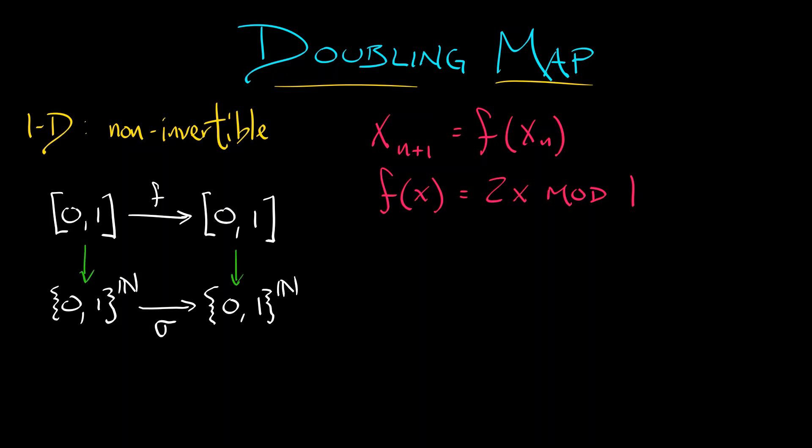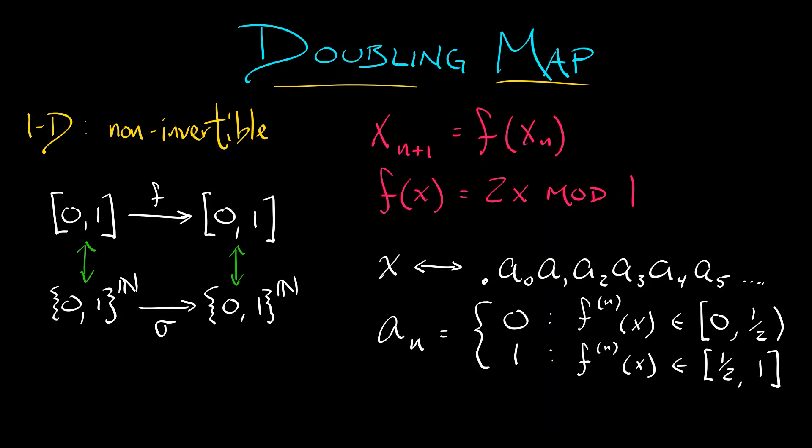This correspondence, this topological conjugacy allowed us to take any point x in the interval and equivalently replace it with a symbol sequence, with a string of digits a_0, a_1, a_2, a_3, a_4, a_5, where each digit, let's say the nth digit a_n, is either a 0 or a 1. And it was a 0 precisely when the nth iterate of x lies in the interval from 0 to 1/2. It was equal to 1 precisely when the nth iterate of x lies in the interval from 1/2 to 1.